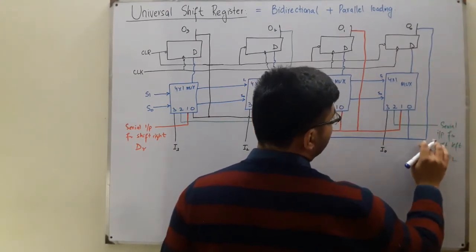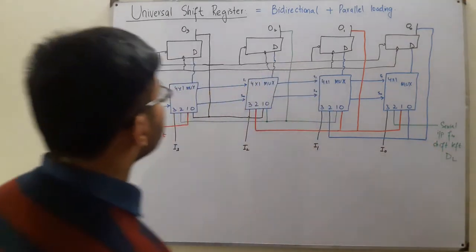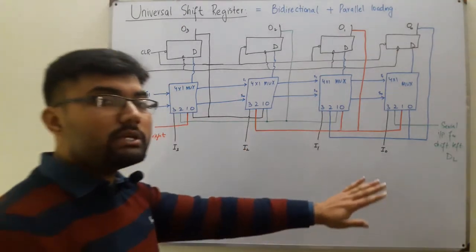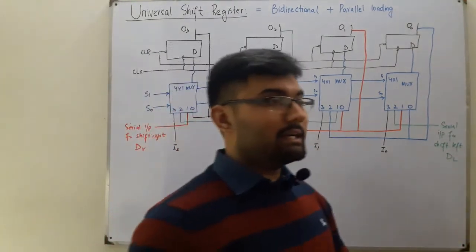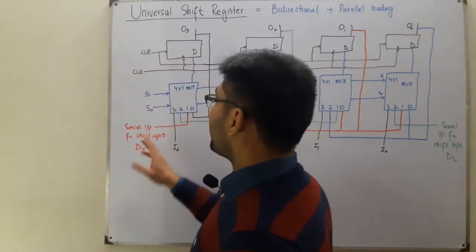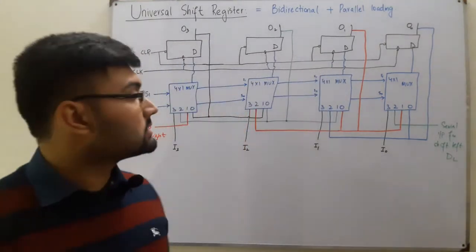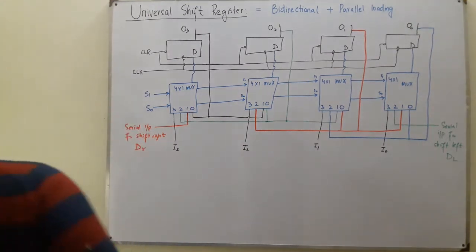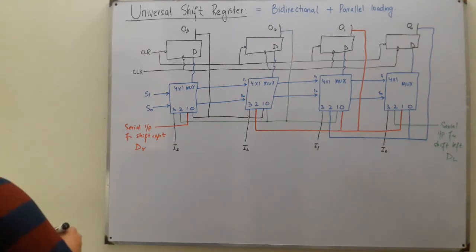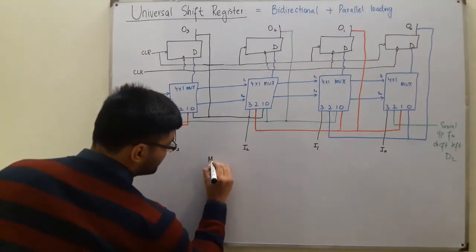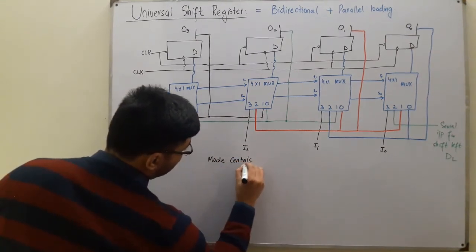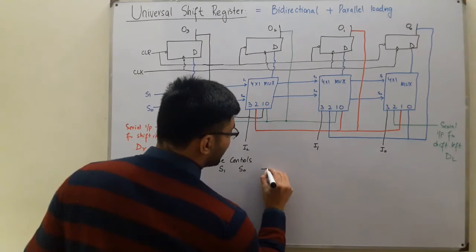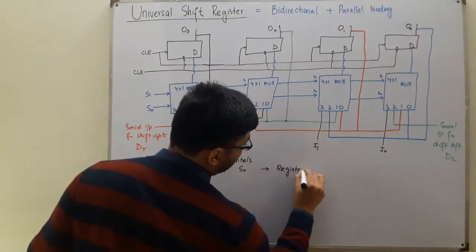This is the complete circuit for the universal shift register. How it shifts right, shifts left, or simply stores data depends on the select lines S1 and S0 — these are the mode controls. In the previous video we had a single mode control M; here we have S1 and S0. Let's build the mode control table showing register operations.